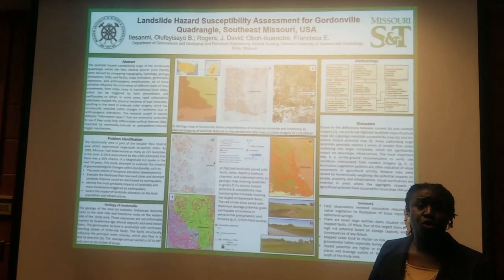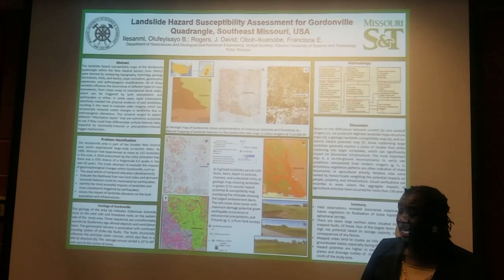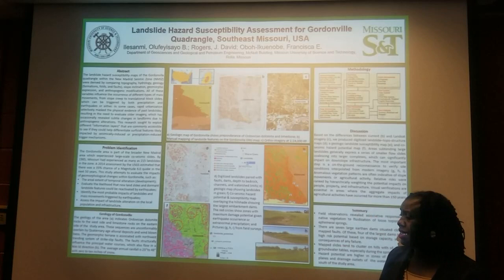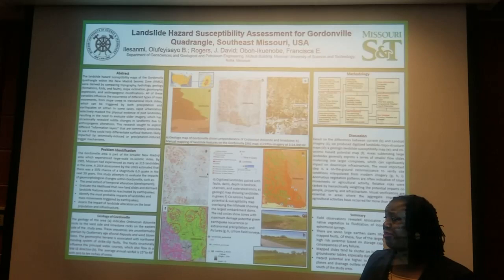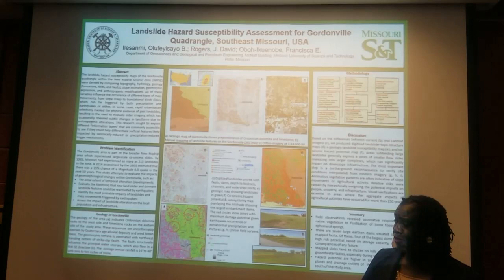What does this mean for the area? It means that in the presence of high-capacity dams in the area, four of the seven we identified have the potential to cause further damage should landslides occur in the presence of earthquakes. This means a higher risk for the population and the infrastructure in the area. Thank you.